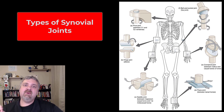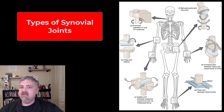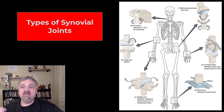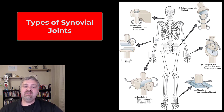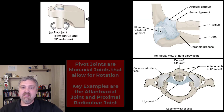Hey everybody, Dr. O here. In this video we're going to talk about the six types of synovial joints. I introduced them in the last video but we're going to go into some more detail here. In order we'll cover the pivot joint, the hinge joint, the saddle joint, the plane joint which I like to call the gliding joint, the condyloid joint which I usually call an ellipsoid joint, and the ball and socket joint. Let's go ahead and dive in.